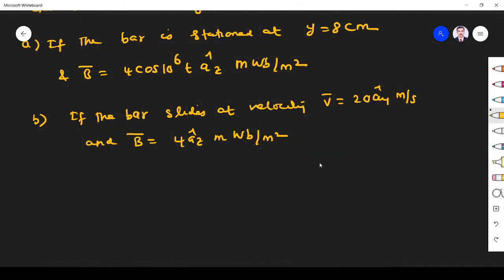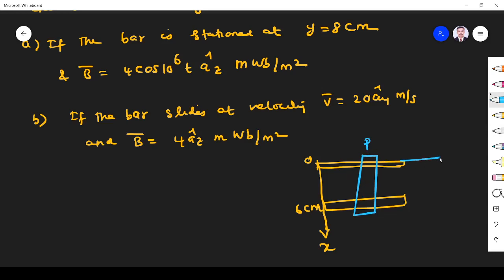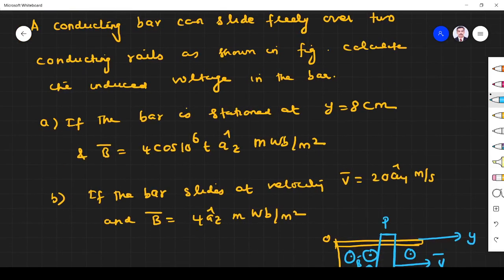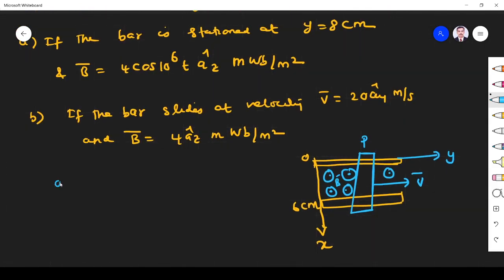The diagram given in the problem is like this. Here are two rails. This is the x direction, 0 to 6 centimeters. This is a rail and the conducting bar is given here. This is v, this is y direction. The bar is moving in this direction with velocity v and the magnetic field is given.